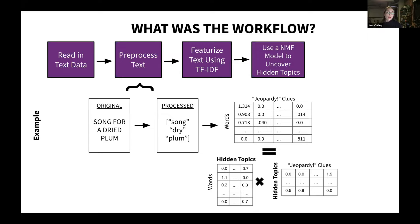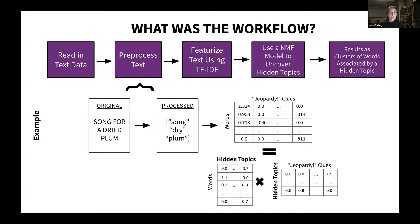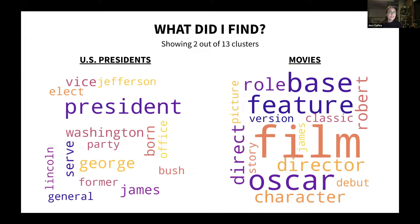My result was 13 clusters of words where each cluster of words is connected by a common theme, and I'll show you a few examples now. I found quite a few interesting things — these are two out of 13 of the clusters. On the left, we have clearly US presidents: Washington, President George — obviously a very clear topic about presidents. On the right, we have movies: feature, film, Oscar.